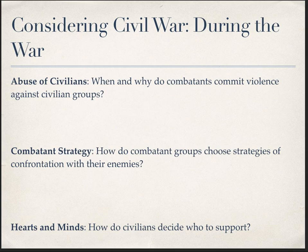The second set of questions considers what happens during the war. One issue is the abuse of civilians — why do some combatant groups commit violence against civilians and others don't, and how do those groups choose which civilian communities to abuse? We might also ask questions about combatant strategy: why do some combatant groups choose strategies of confrontation, and how do they choose the territory they'll conquer, the governance strategies they use, and the weapons they employ?